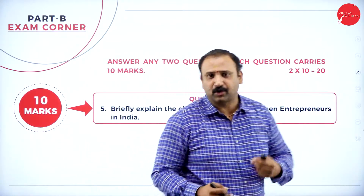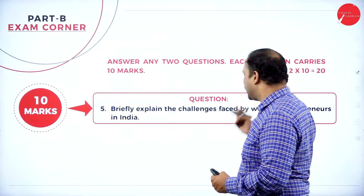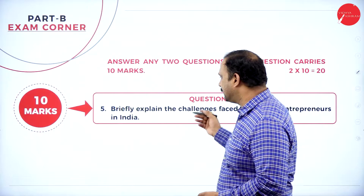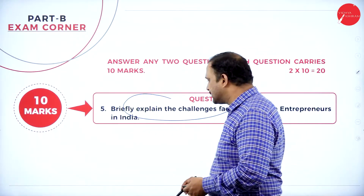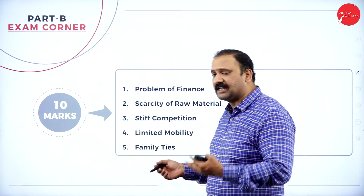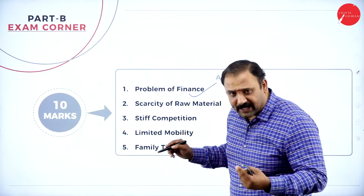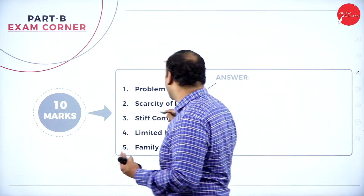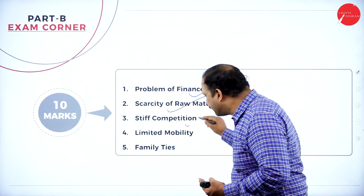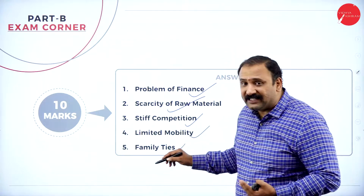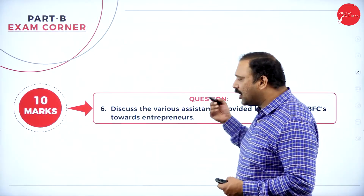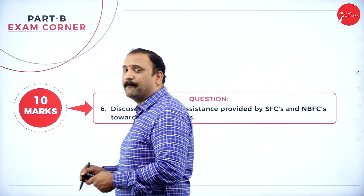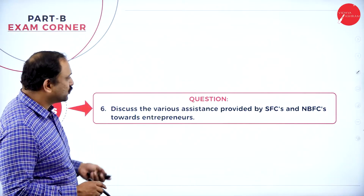Now we move to the 10-marks section — two 10-mark questions for a total of 20 marks. The first question: briefly explain the challenges faced by women entrepreneurship. Challenges include the problem of finance, which is present in every economy, scarcity of raw material, stiff competition, limited mobility, and family ties.